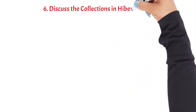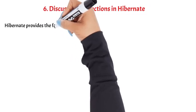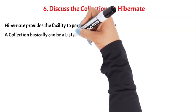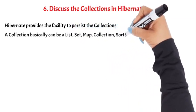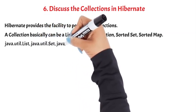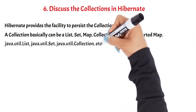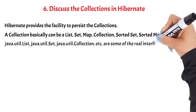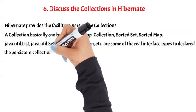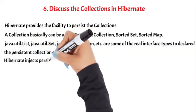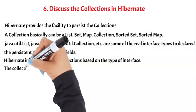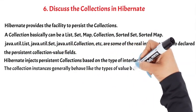Question 6: Discuss the collections in Hibernate. Hibernate provides the facility to persist the collections. A collection basically can be a List, Set, Map, Collection, SortedSet, SortedMap, and their Java util equivalents — these are some of the real interface types used to declare the persistent collection value fields. Hibernate injects persistent collections based on the type of interface. The collection instance generally behaves like the types of value behavior.